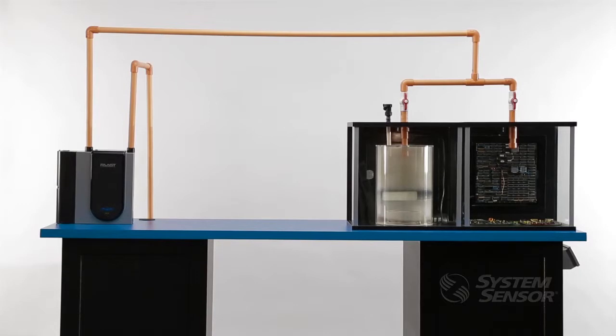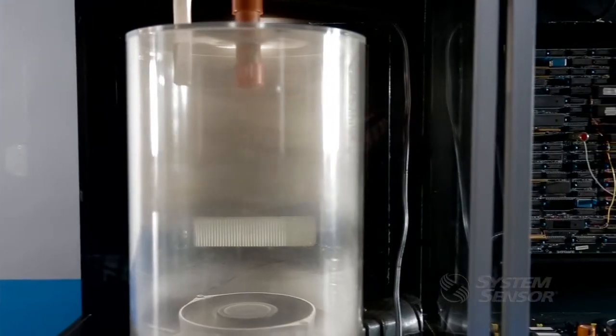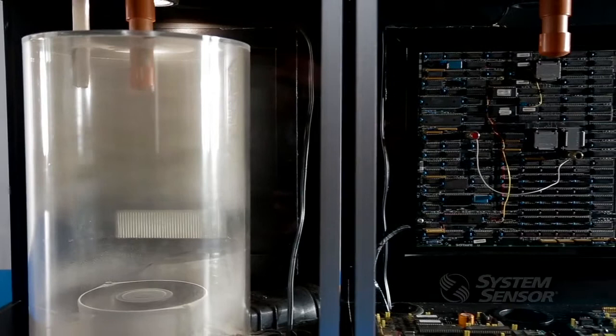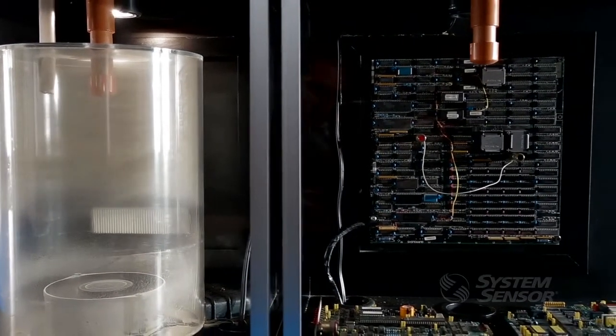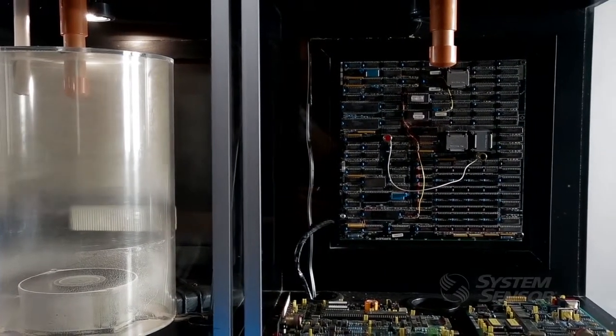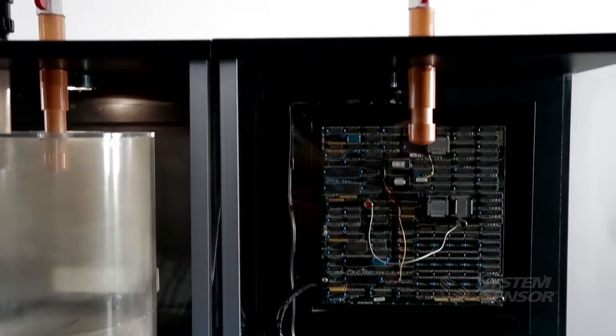By passing too much current through the wire in the simulated data center environment, the wire will begin to overheat and release particles of combustion associated with incipient fire conditions invisible to the naked eye.